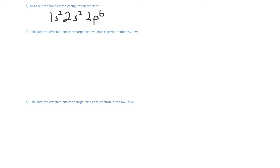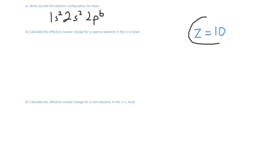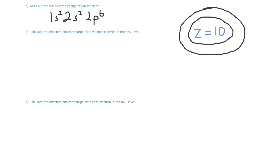Now let's move on to Part B: calculate the effective nuclear charge for a valence electron in the n equals 2 level. To start this problem, let's draw a picture of the neon atom. In the nucleus, we have a nuclear charge Z equal to 10, which is also the atomic number. And because we're looking at the n equals 2 level, and we know that the highest energy level in neon is 2 as we can see in our electron configuration, we will draw two energy level rings surrounding this nucleus of 10 protons.